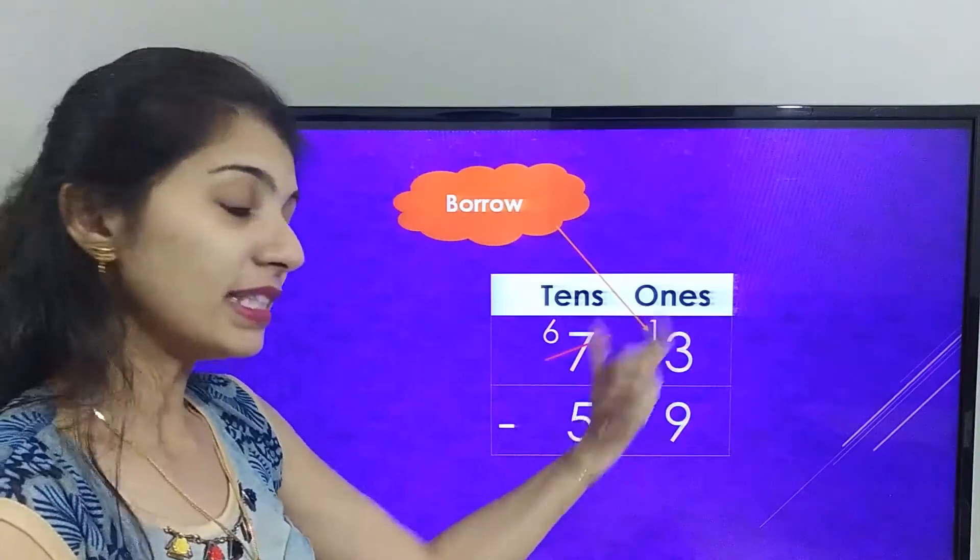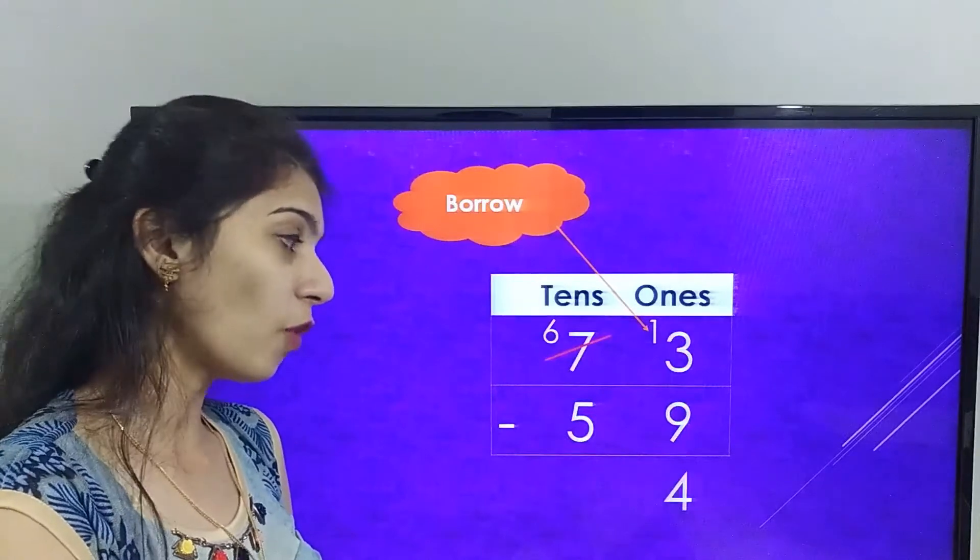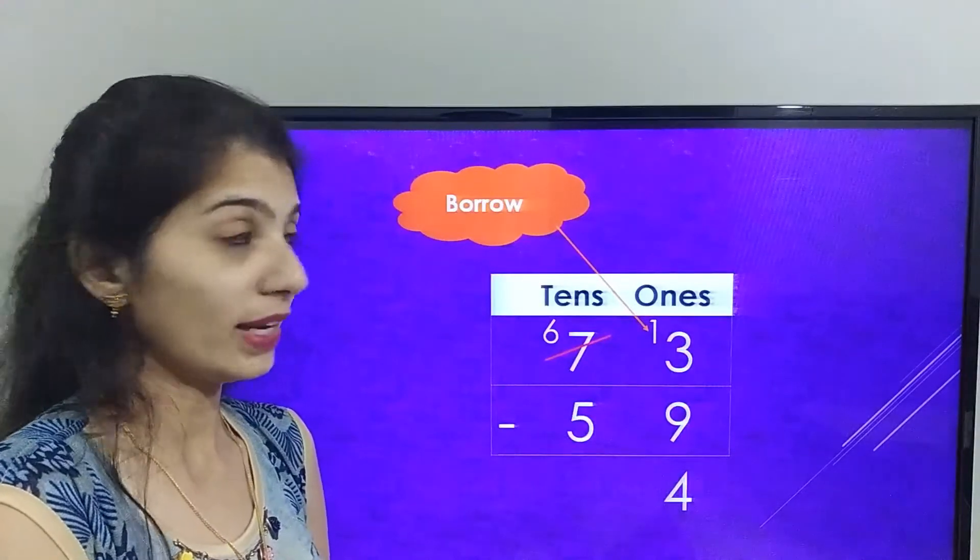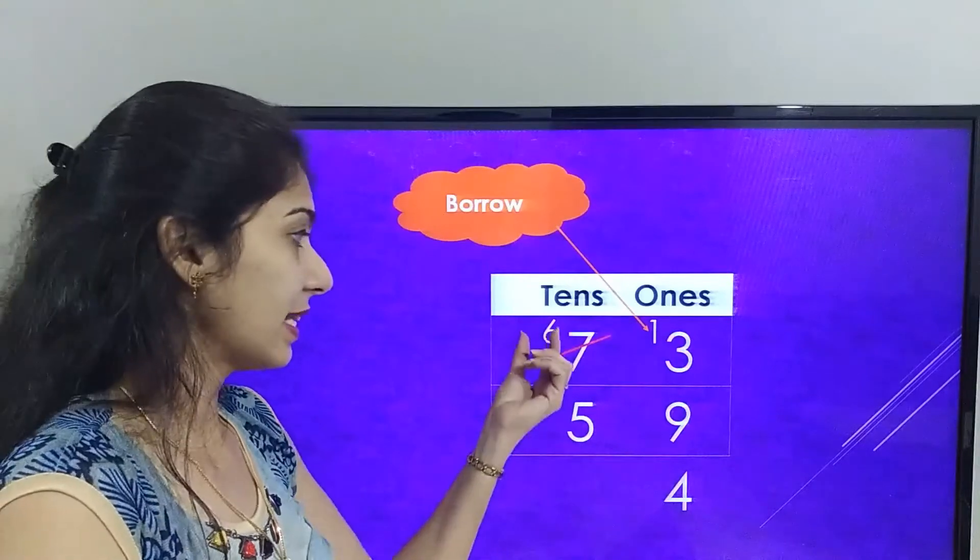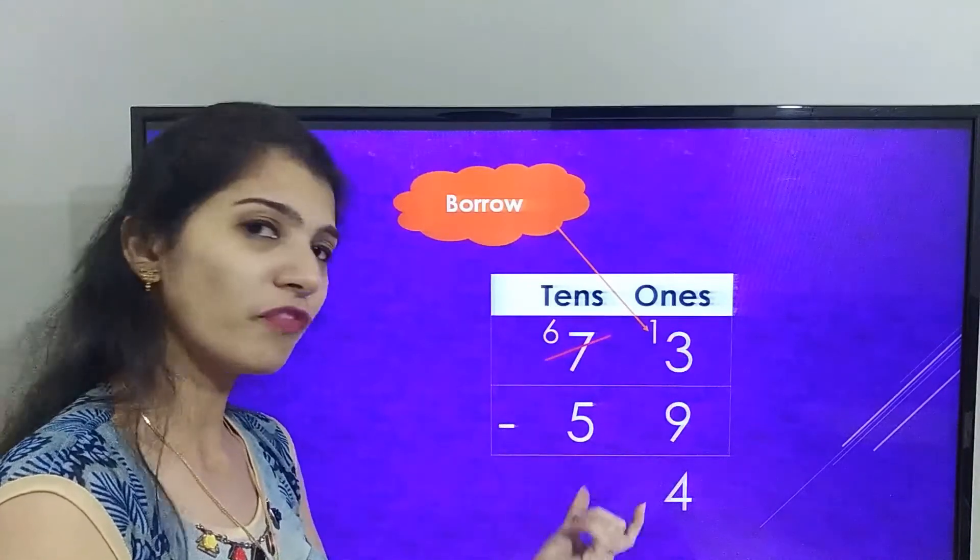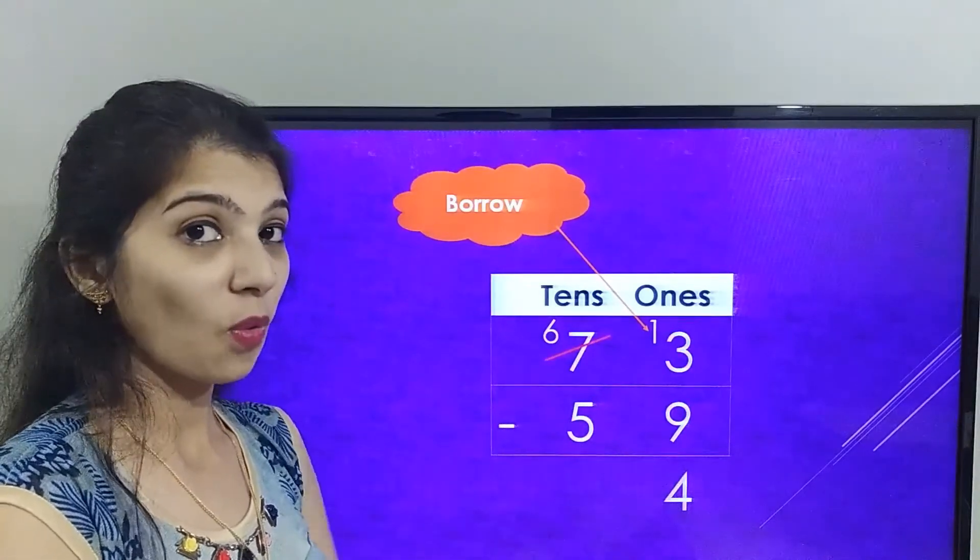Now let's solve tens place. That is 6 minus 5 is 1. So the final answer number we got is 14.